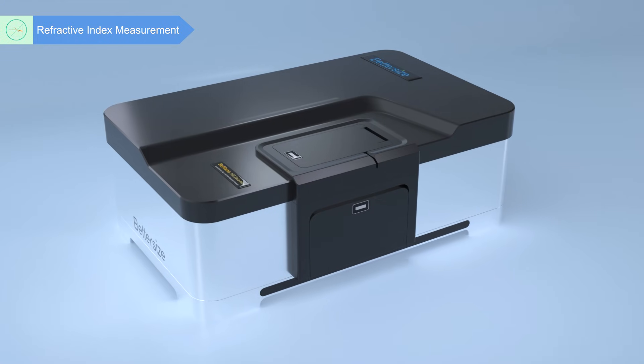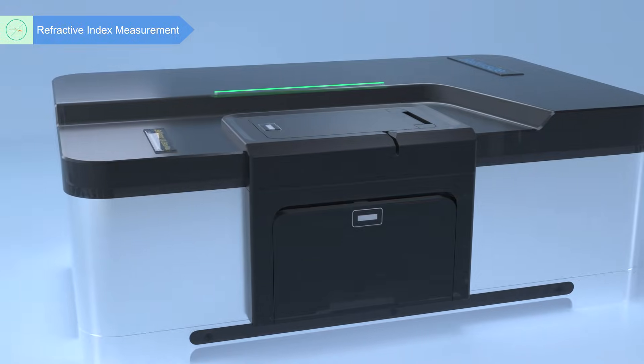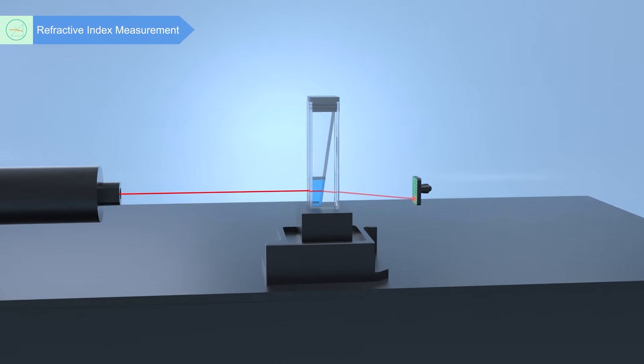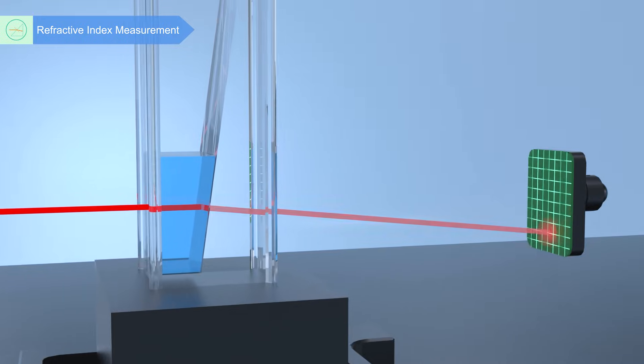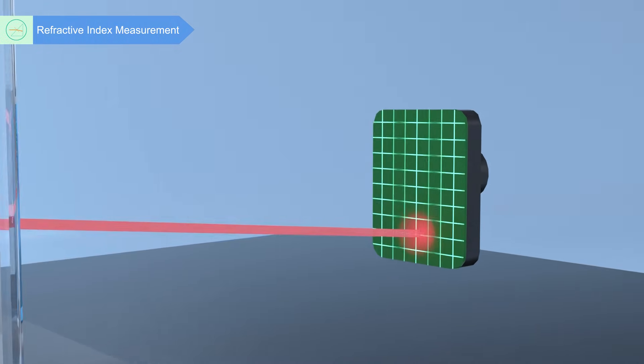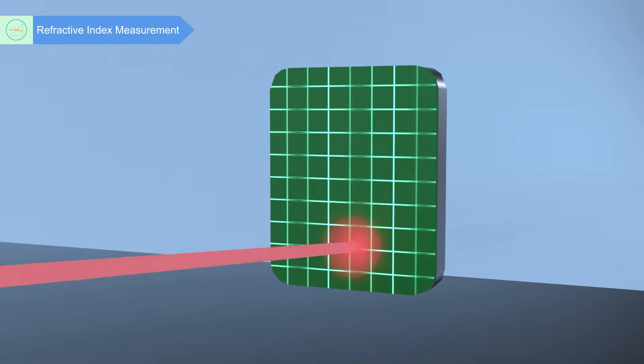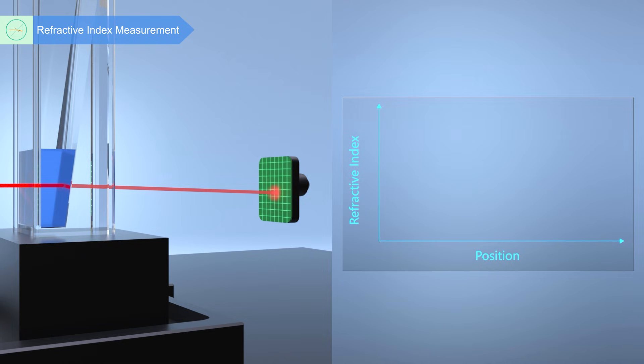Bnano's patented refractive index detection technology integrates the RI detection capability into the Bnano system. The sample is placed in a wedge-shaped sample cell and the laser spot is projected onto the image detector. By utilizing the displacement of the laser beam in liquids with different refractive indices, the refractive index information of the liquid can be accurately obtained.